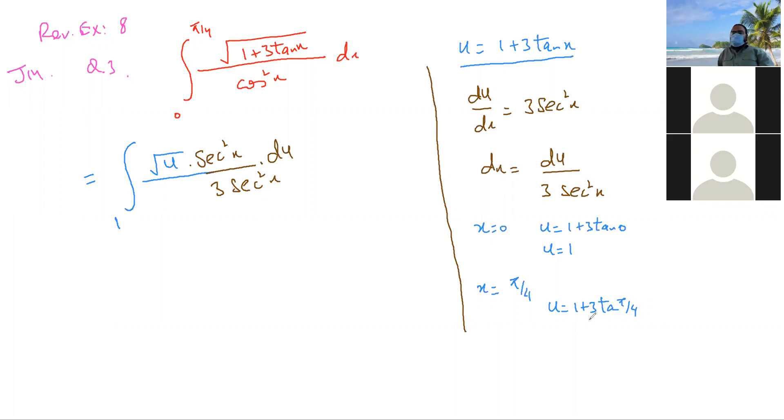That is 1. So this u becomes 4. So this is going to be 4 over here. I can cancel the secant square with the secant square. Now this becomes a very little, small, chota-sa, ku-sa question is left over here. This is 1 over 3, limit from 1 to 4, and this is under root u.